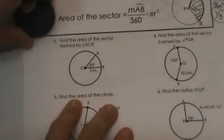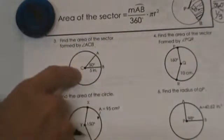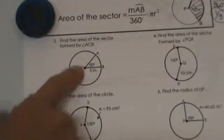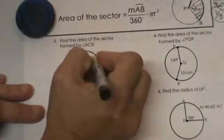So let's try a couple of examples here. Find the area of the sector formed by angle ACB. So let's set up our formula. We are actually going to find this shaded region right in here.